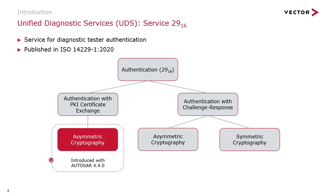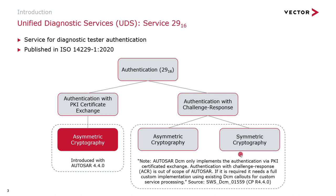Asymmetric cryptography is what is supported with AUTOSAR from version 4.4.0. The other two options are really outside the scope of AUTOSAR — if you want to do these, it's a custom implementation. It's not impossible, but it's not standardized, so you need to understand what you're going to do and specify it so it can be implemented.